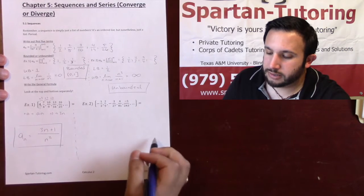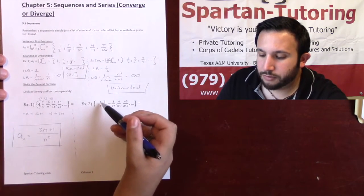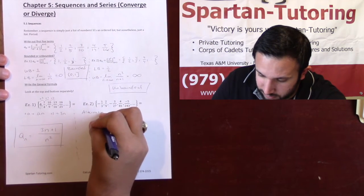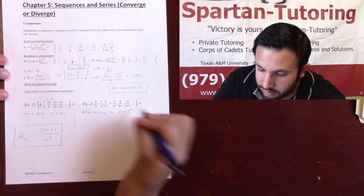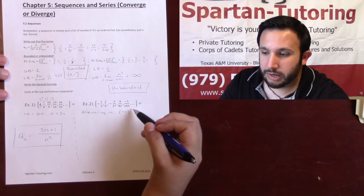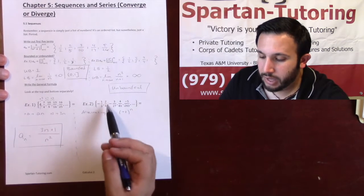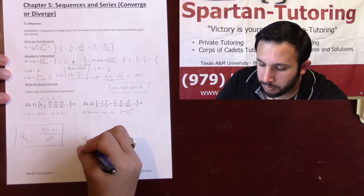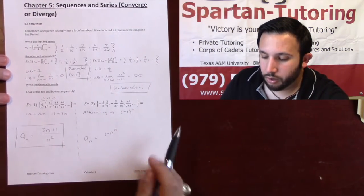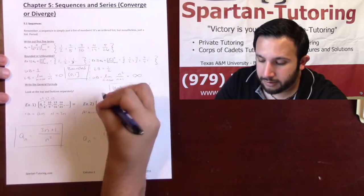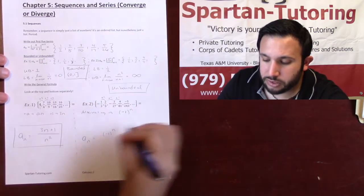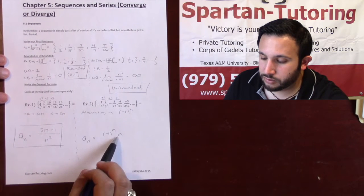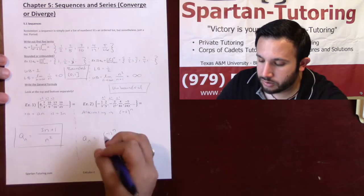For the second example, the sequence is alternating, so account for that with (-1)^n, since (-1) to an odd power is negative and to an even power is positive. Now just look at the absolute values of the numbers: 1, 2, 3, 4, 5. From 1 to 2 is +1, 2 to 3 is +1, and so forth — that's just 1 times n, which equals n. When n=1 output is 1, when n=2 output is 2. Top is taken care of: (-1)^n · n.